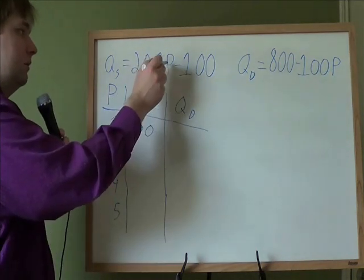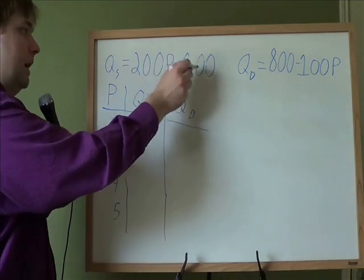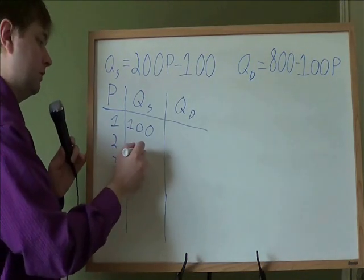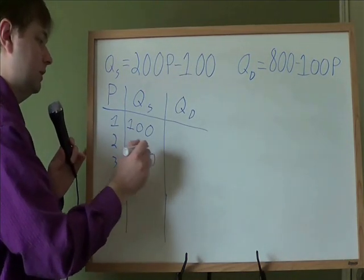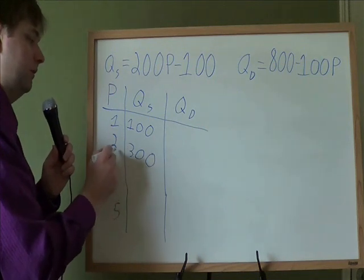And then at a price of $2, 200 times 2, that's 400, minus 100, that gives you 300. If the price of apples goes up to $2, all of a sudden farmers are going to want to sell 300 of them.